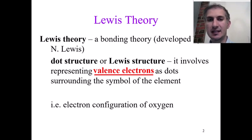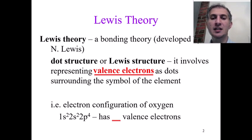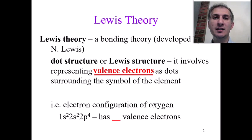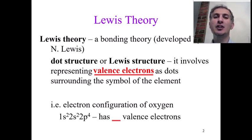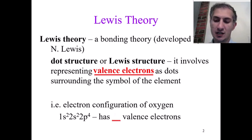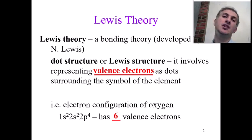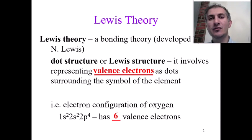For example, the electron configuration of oxygen shows that the highest shell number is two, and the number of electrons in that shell is six. So the number of valence electrons for oxygen is six. You can get this from the electron configuration or from the periodic table group number — both should give the same answer.